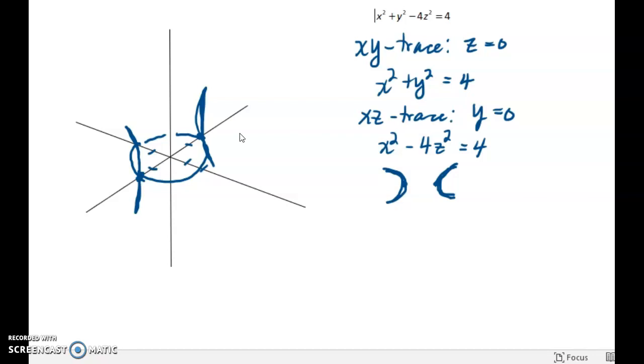So then what's left? The yz-trace, defined by x equals 0. So I set x equal to 0 here, and I get y squared minus 4z squared equals 4.